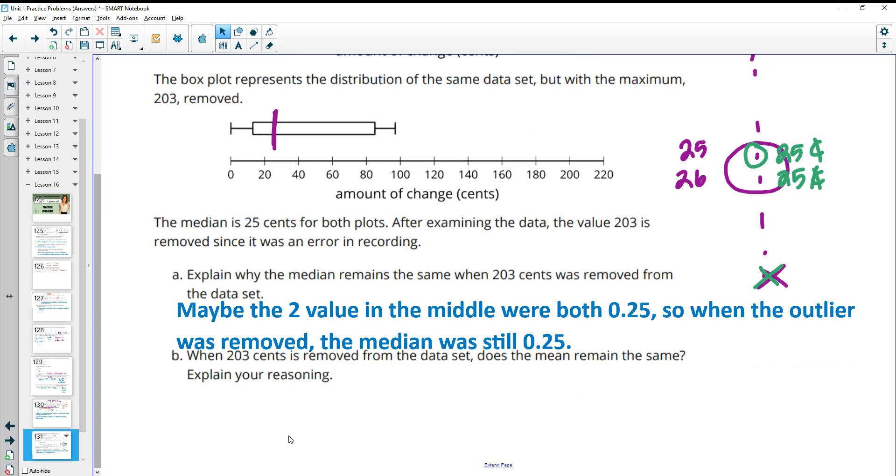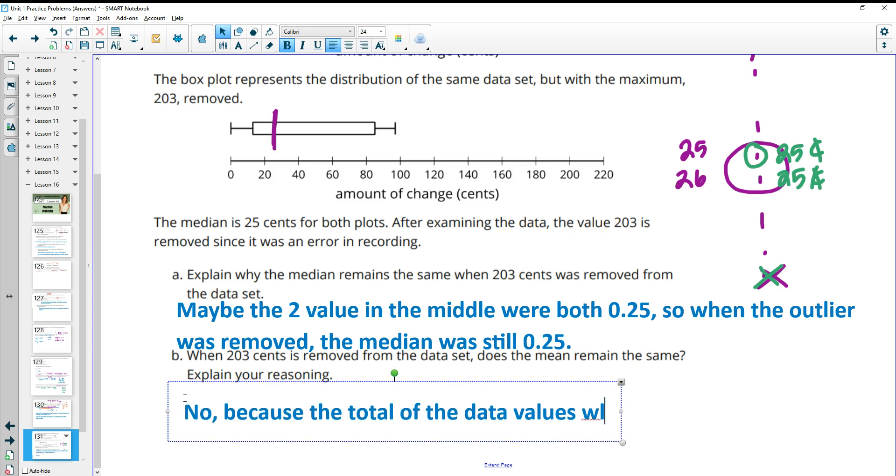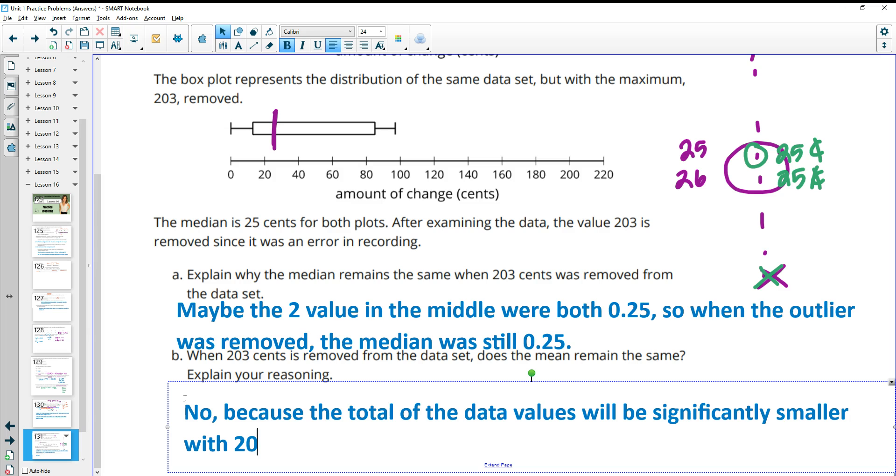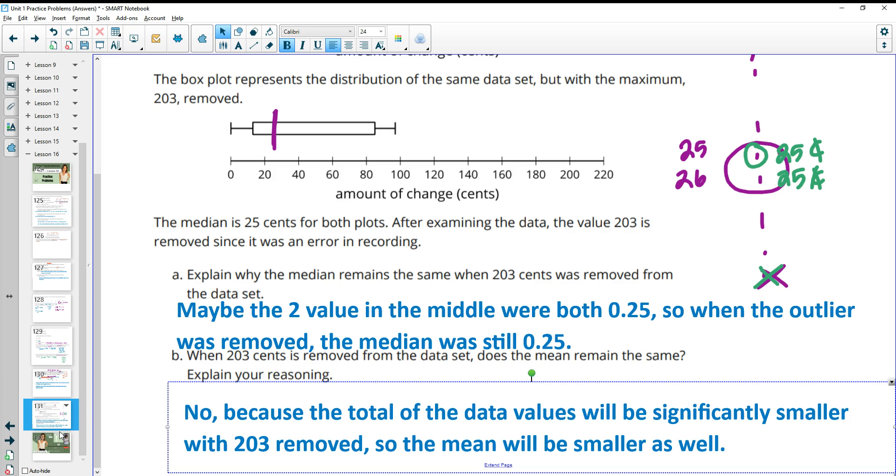When the 203 cents is removed from the data set, does the mean remain the same? And that would be no, because the total of the data values, when you add them all up, will be significantly smaller. With 203 removed, the mean will be smaller as well.